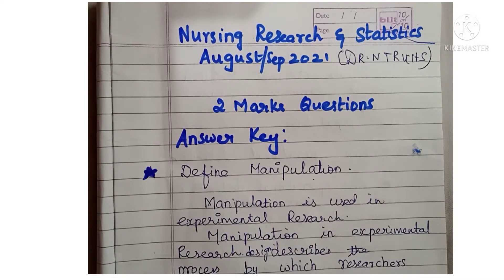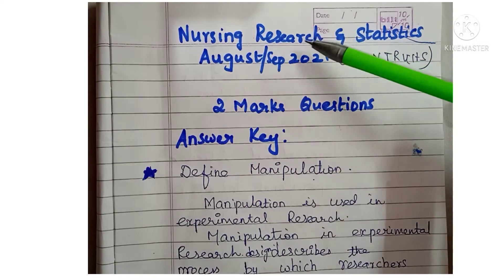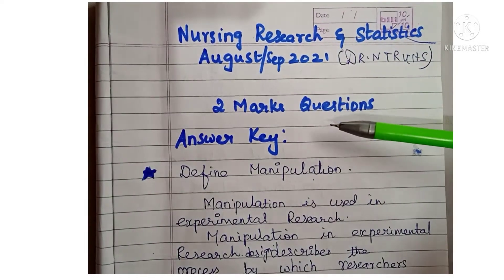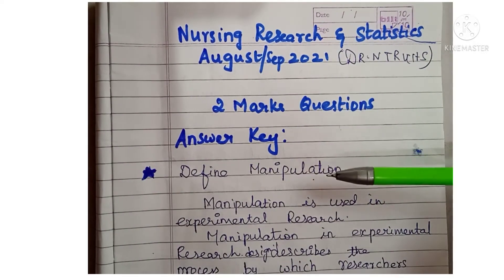In Nursing Research they will be giving 5 two-mark questions, and in Statistics they will be giving 5 two-mark questions. In this video, exclusively for Nursing Research alone, I am going to discuss the 5 two-mark questions answer key.